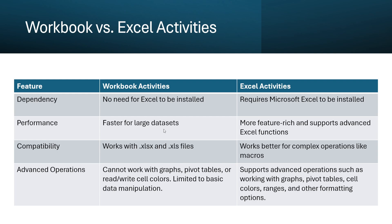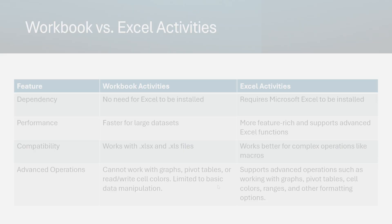Excel activities support advanced Excel functions like working with graphs, pivot tables, and more advanced operations. Workbook activities can only work with XLSX and XLS files, whereas Excel activities can work with XLSX, XLS, CSV, and Excel files as well. Workbook activities cannot work with graphs, pivot tables, or read/write cell colors. To summarize: workbook activities are great for lightweight operations while Excel activities are perfect for handling advanced operations.